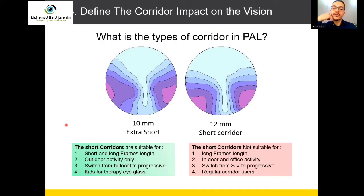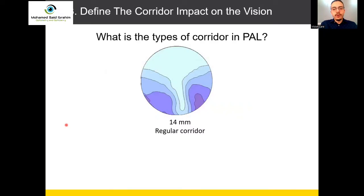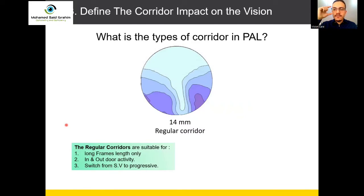Short corridor is also not suitable for users who already have progressive lenses with regular or longer corridor. If the customer was previously using progressive with regular or longer corridor, don't give them short corridor. Regular or longer corridor is suitable for longer frames only, and people with most activity both indoors and outdoors can be given regular corridor. People switching from single vision to progressive — it's very suitable for them to use regular corridor.